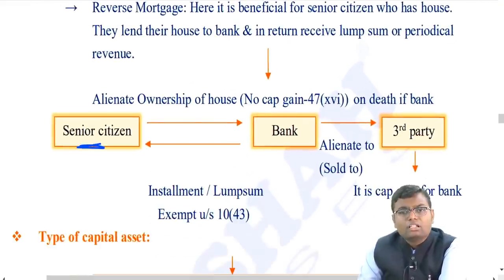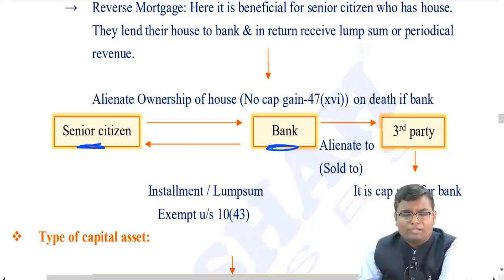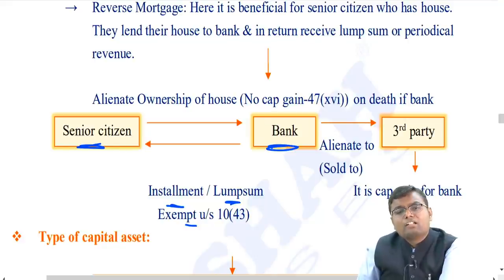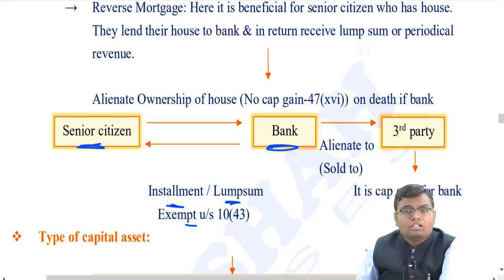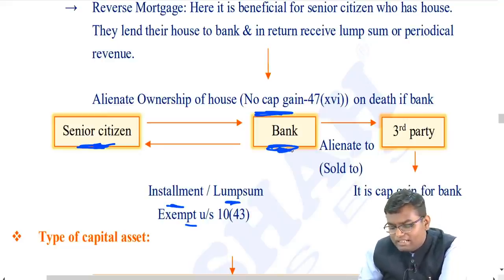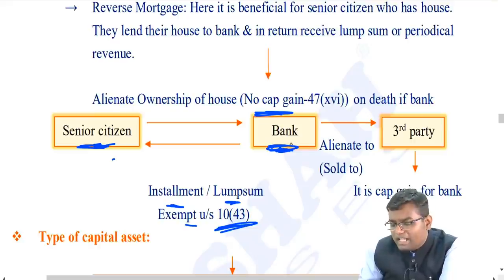Reverse mortgage: a senior citizen gives ownership of their property to a bank, staying in it until death, and receives installments or a lump sum. This is not regarded as a transfer under Section 47(xvi). Any installment or lump sum received is exempt under Section 10(43). When the bank later sells the property to a third party to recover the loan, capital gain arises for the bank.